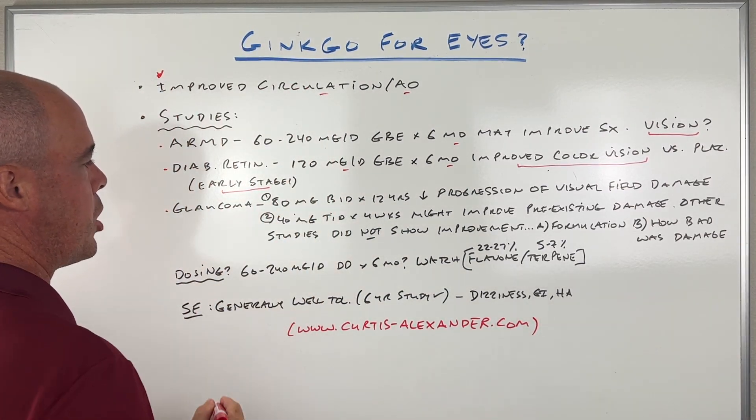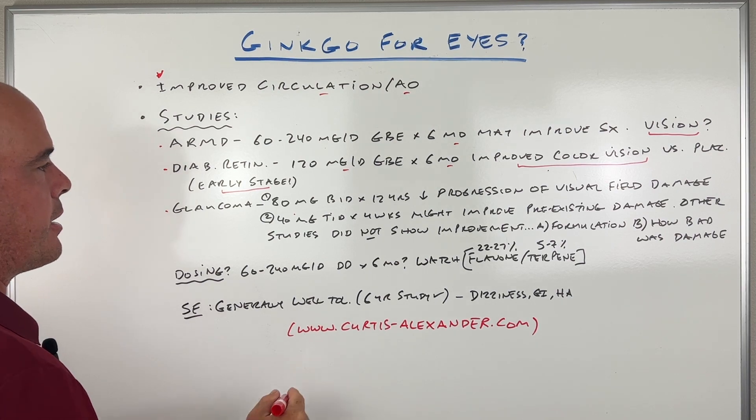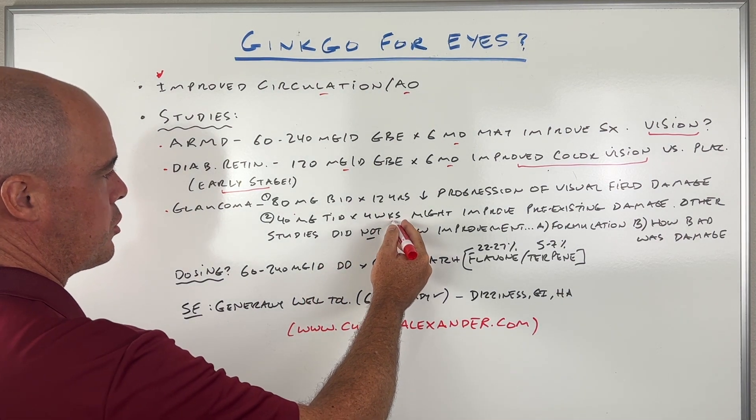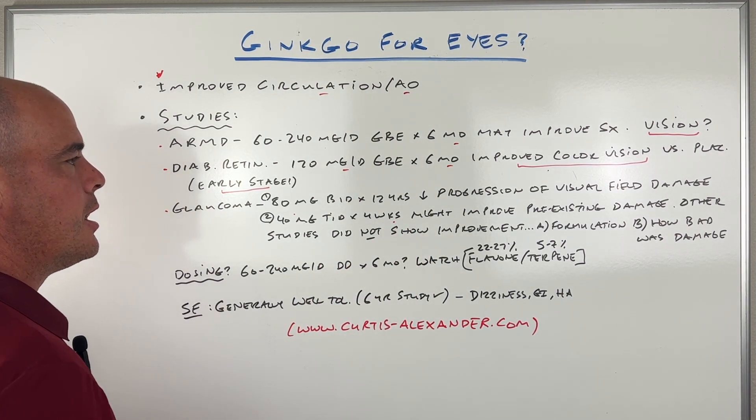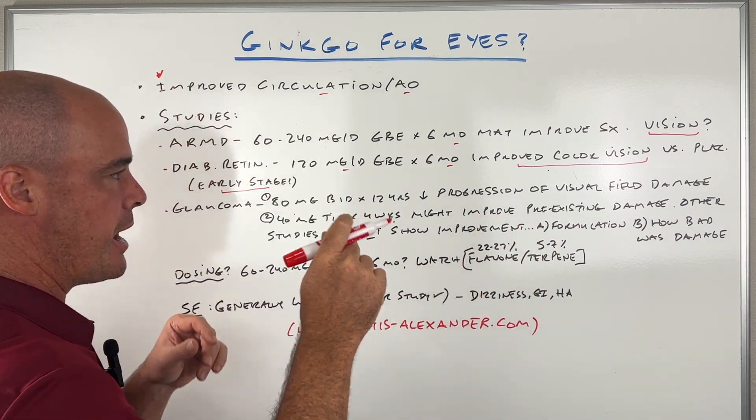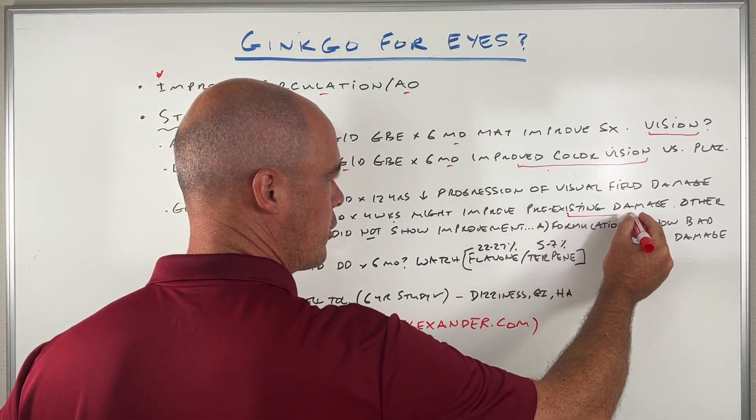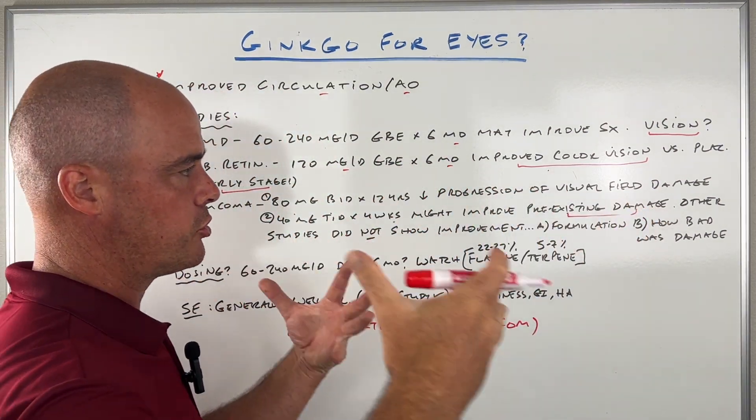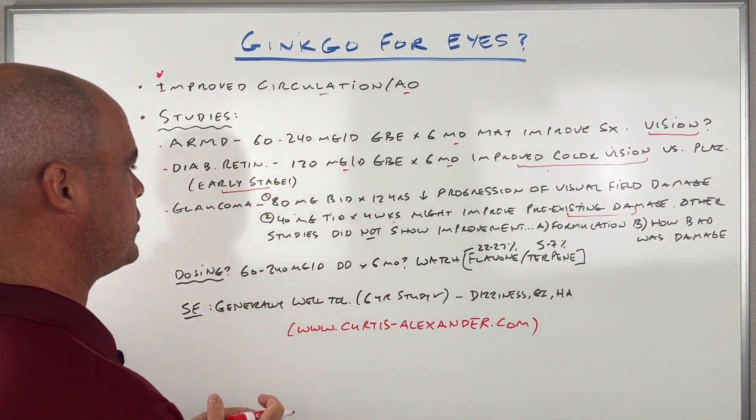Second study gave a smaller dose, 40 milligrams three times a day, much shorter time period of four weeks. They found that it might improve preexisting or already damage that was already there. So that was promising.